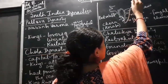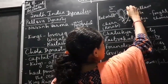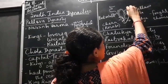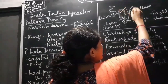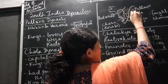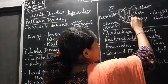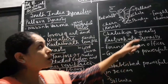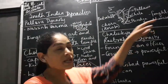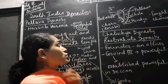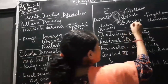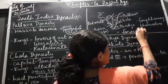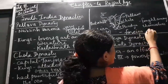These three dynasties — the Rastrakuta dynasty, the Chera dynasty, and the Pandya dynasties — they fought among themselves, and it was during that time when foreign invaders started coming to India.